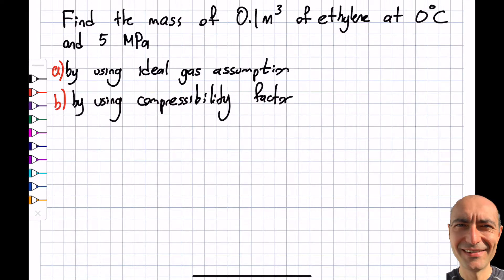The question asks you to find the value of the mass by using the ideal gas assumption first, then use the compressibility factor. Let's get going. P times the specific volume will be equal to R times T.